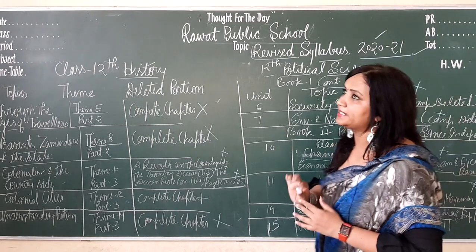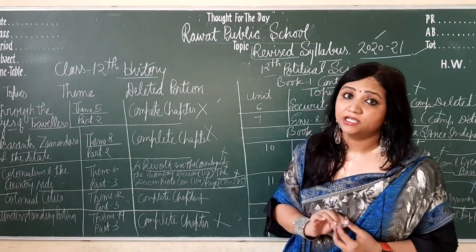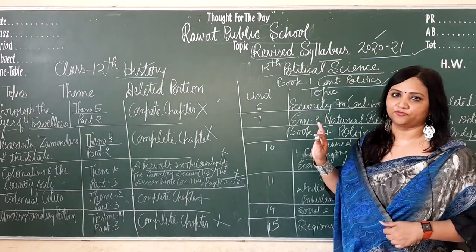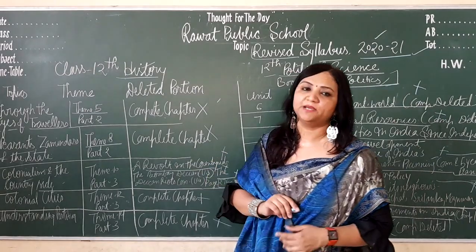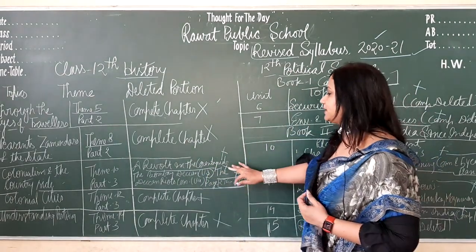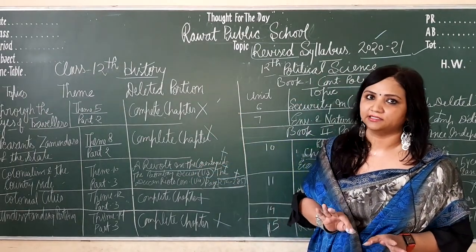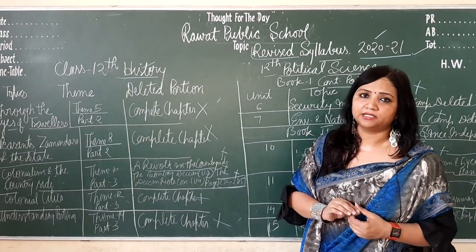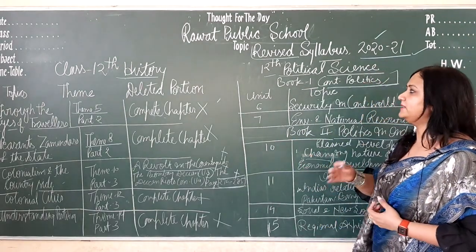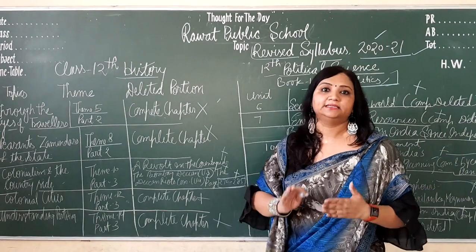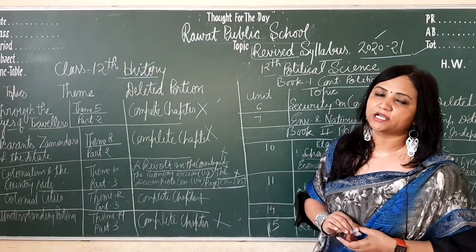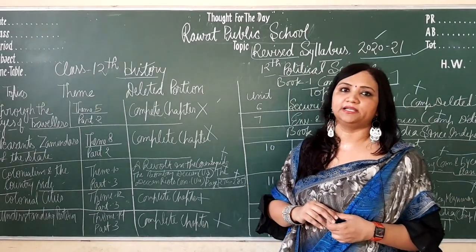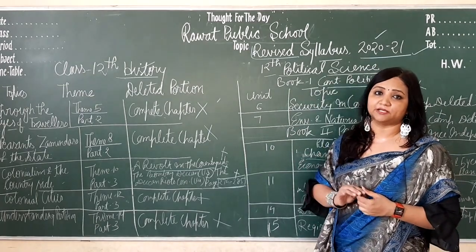So this is the revised syllabus for Class 12 History and Political Science. Mark your index book so that when you study you will know these chapters are not part of your course. For topics with only partial deletions, cross only those specific topics — the rest of the chapter remains in your course. I will send a video in the WhatsApp group so you can properly observe and mark the deleted chapters. Thank you so much.